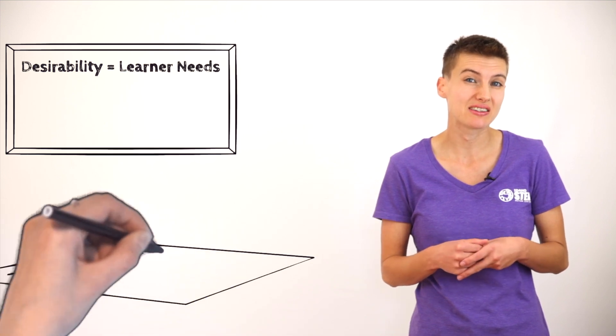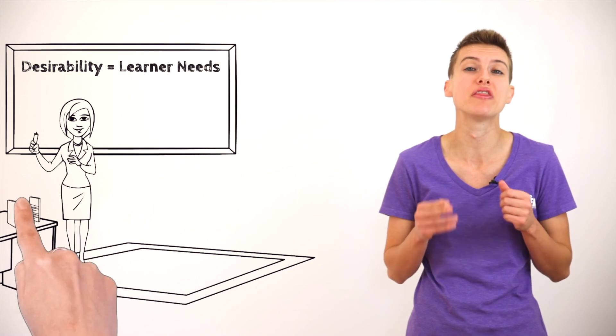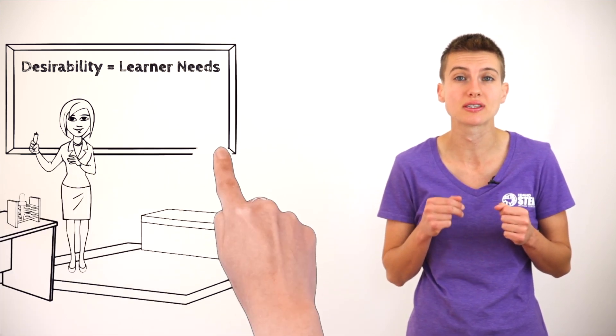Desirability describes the extent to which a design meets a user's specific needs. In learning design, this means identifying the learners you're working with and what they need in order to learn successfully.